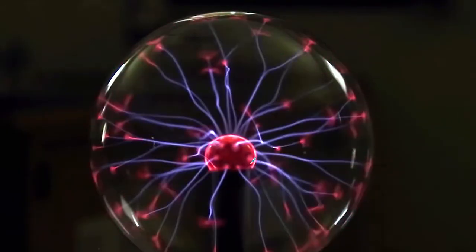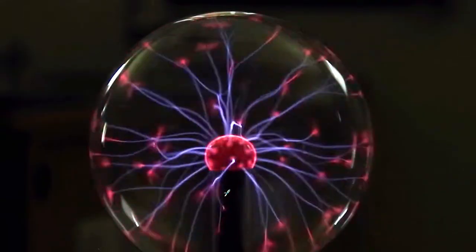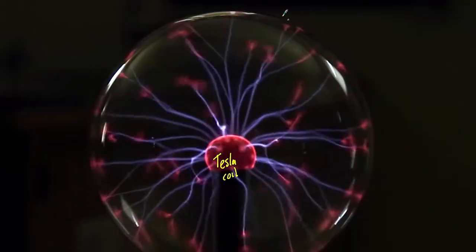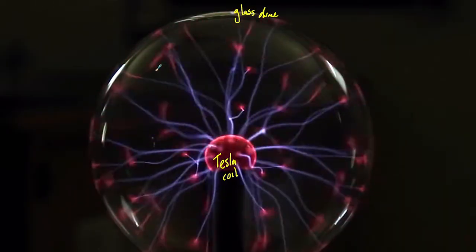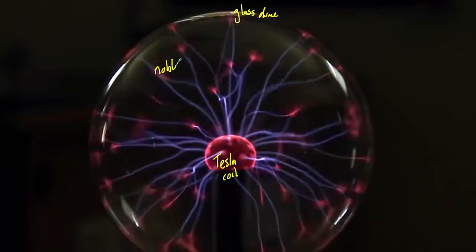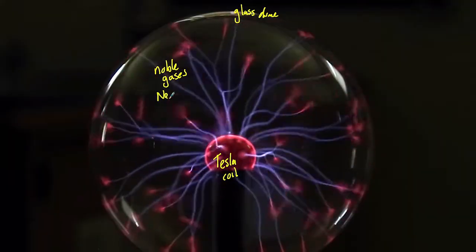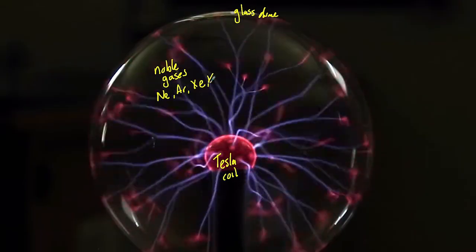So the first thing you'll notice here is that there's a couple of components to our plasma coil. So here is the Tesla coil, and then we have our glass dome at the top. And it is filled with a number of noble gases. Now there are a number of noble gases here. The predominant one is neon, but there can also be some argon, some xenon, and some krypton.